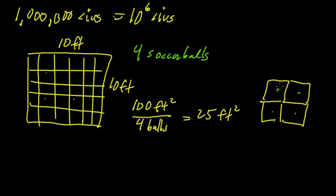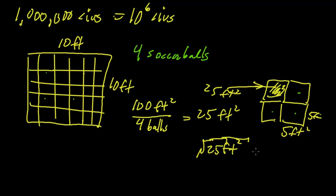And each of these areas is 25 square feet. It also means if this is 25 square feet, then the side is going to be a 5 foot by 5 foot square. That's really just the square root of 25 square feet because it's 5 foot on each side.